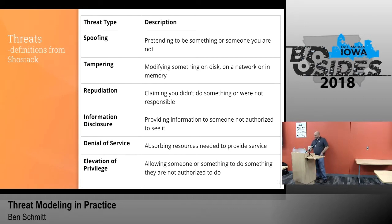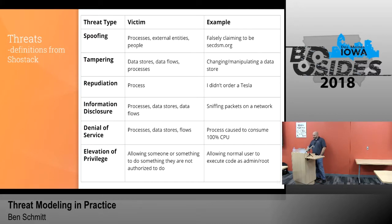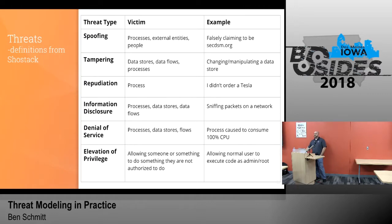Speaking of denial of service and fork bombs — a buddy of mine was a sysadmin in North Dakota, and when students would run a fork bomb on a shared system, he'd lock out their account and make them write a written apology to get it unlocked. Fork bombs are old school but still kind of neat. STRIDE examples: Spoofing — falsely claiming to be secdsm.org; you could use a homoglyph domain to make it look like secdsm.org. Tampering — changing or manipulating a data store. Information Disclosure — sniffing packets that aren't encrypted; SAP authentication over the wire used to just be encoded, not encrypted or hashed. Denial of Service — 100% CPU peg or a big DDoS. Elevation of Privilege — can you get authorization to do more than what you should as a regular user?